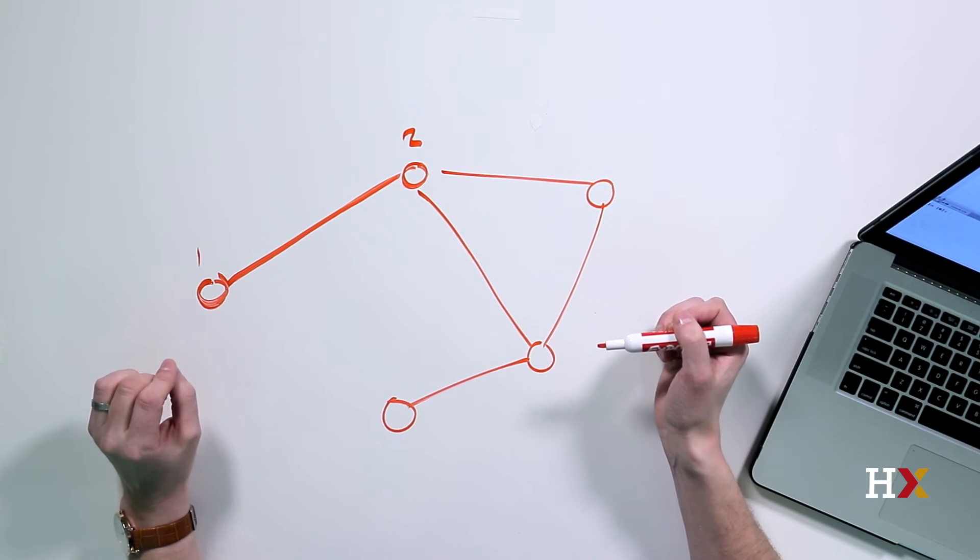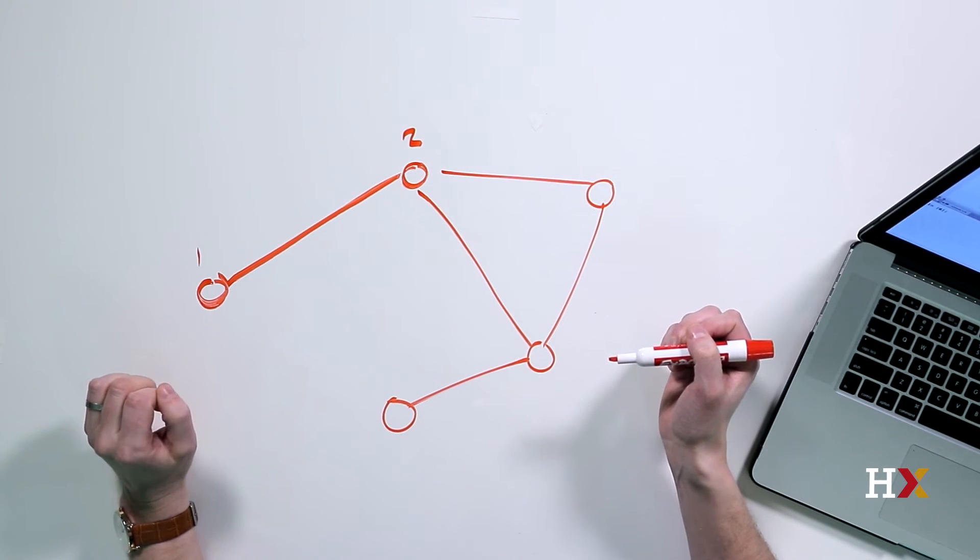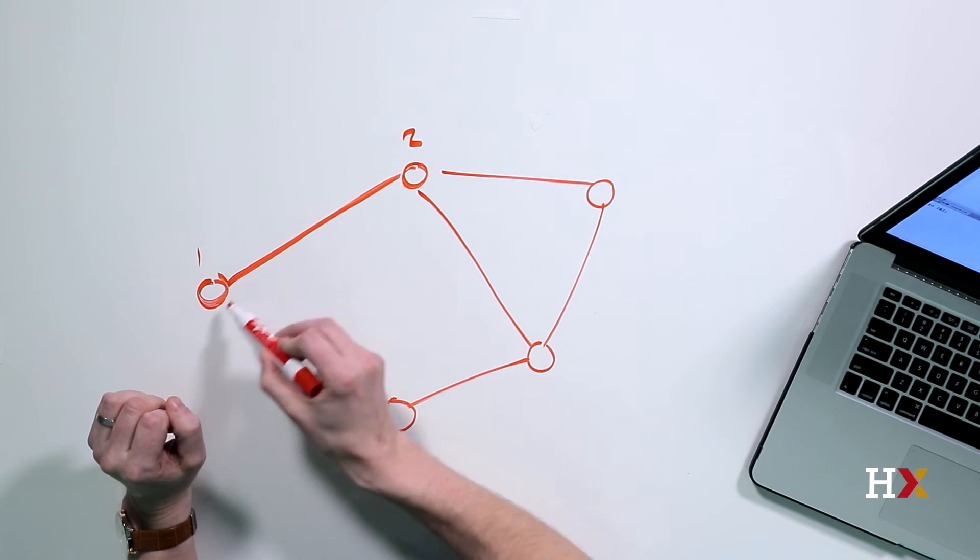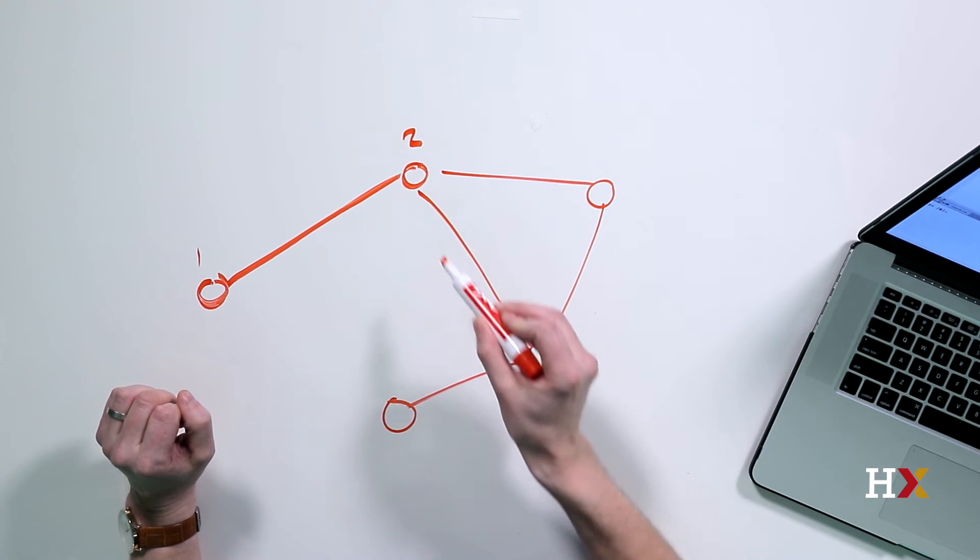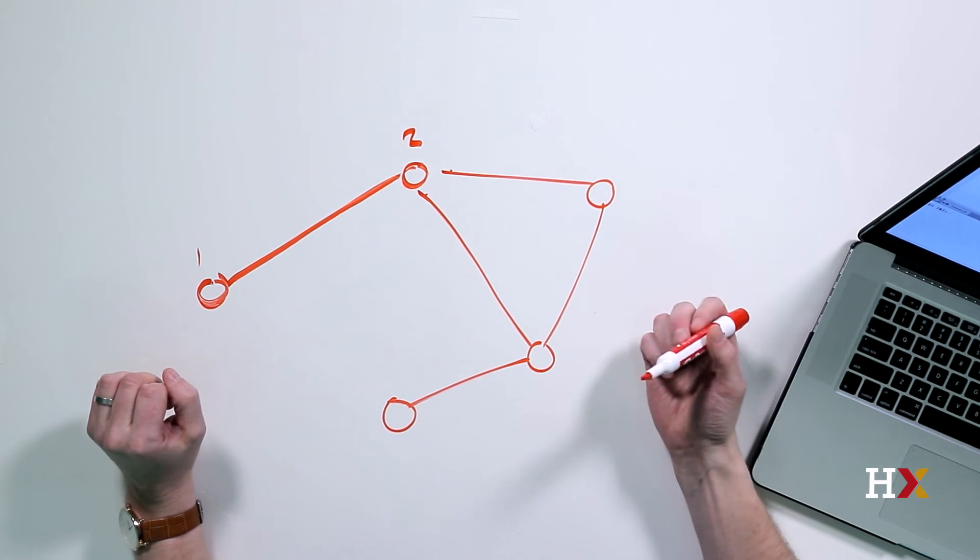The degree of a vertex is the number of edges connected to it. So the degree of this vertex is one, the degree of this vertex is one, two, three, and so on.